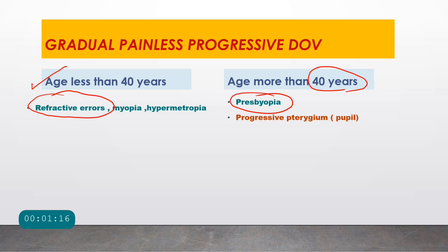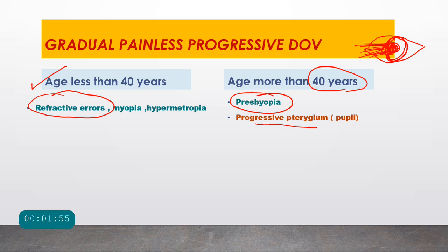Another cause seen in age more than 40 years that is gradual and painless is progressive pterygium. Discussing causes in anatomical order starting from the conjunctiva: pterygium is a fleshy outgrowth from the conjunctiva encroaching onto the cornea. Once it encroaches the pupillary area, it causes diminution of vision. It is usually seen in ages above 40 years.